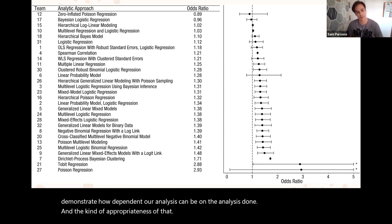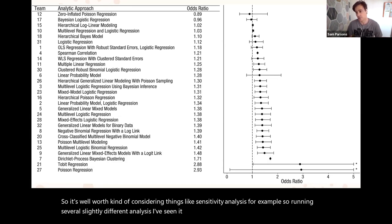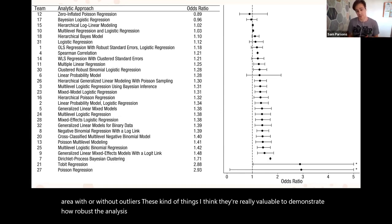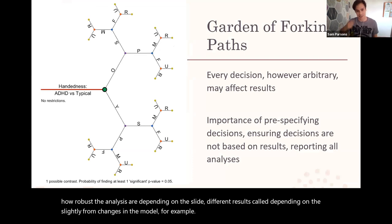It's well worth considering things like sensitivity analysis, so running several slightly different analyses. I've seen it with do we run with or without this particular covariate, with or without outliers, these kinds of things. I think they're really valuable to demonstrate how robust the analyses are depending on the slightly different results or depending on the slightly different changes in the model for example.